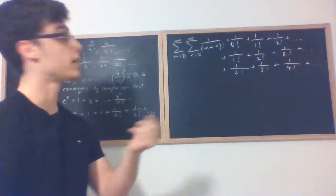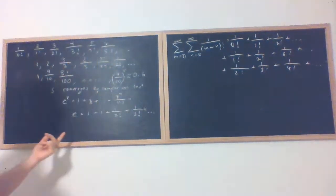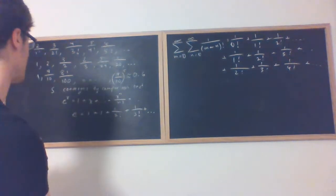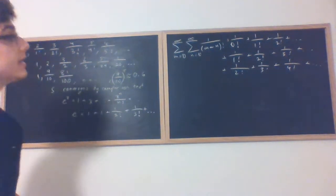Now from the jump we could see that this sum has something to do with e. The Maclaurin expansion for e to the x gives us this expression for e.